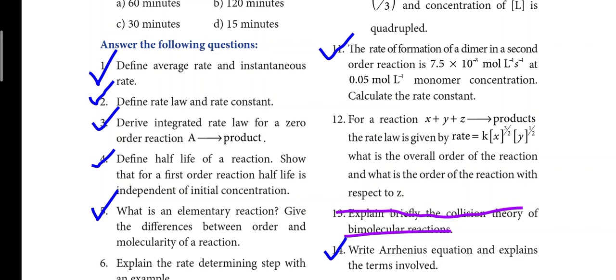There is also an Arrhenius equation question — it is maximum one question, five marks. Fourth question: define half life of a reaction. Show that for a first order reaction, half life is independent of initial concentration. Fourth question is important — three marks.